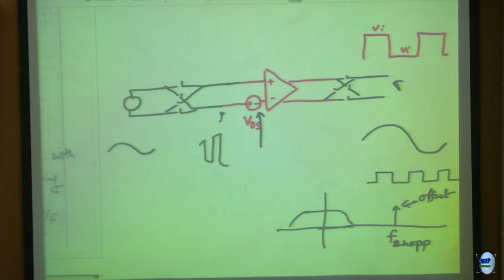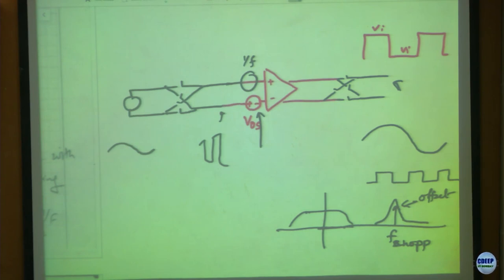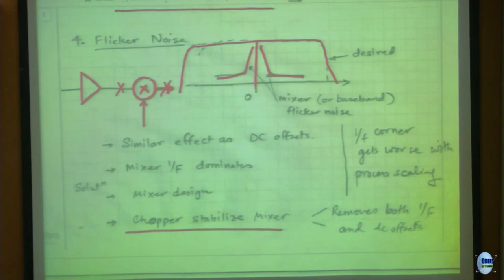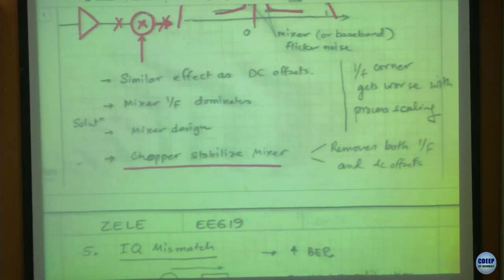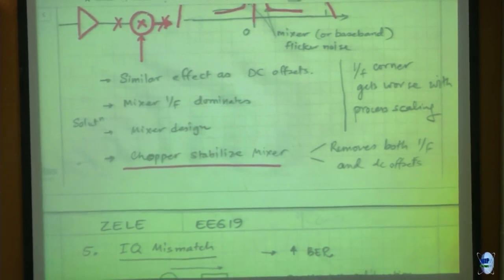We just moved the offset to a higher frequency, and we can get rid of it by filtering, depending on the chopping frequency chosen. Similarly, if offset can go to high frequency, the 1/f noise also goes to high frequency. Whatever 1/f noise you have is represented at the amplifier input - it will also show up shifted to the chopping frequency. So 1/f noise is shifted to high frequency and we can filter it out. This technique - chopper stabilization - works pretty well.